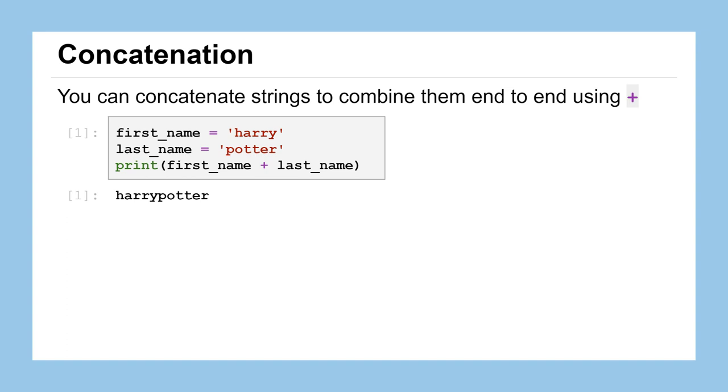First off, we can concatenate two strings together. Concatenate is just a fancy word for combined end to end, and we can do that using the addition symbol that we saw in a previous lesson for adding two numbers together. Here we have the variable first_name assigned to the string Harry and the string Potter assigned to the variable named last_name. We're going to print first_name plus last_name, or first_name concatenated with last_name. Notice when we do that print statement, those two strings are glued end to end; there's no spacing in between them.